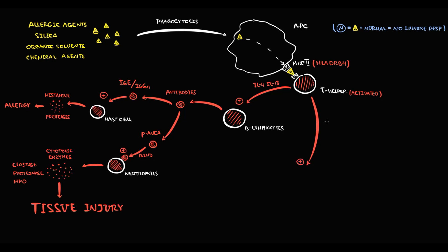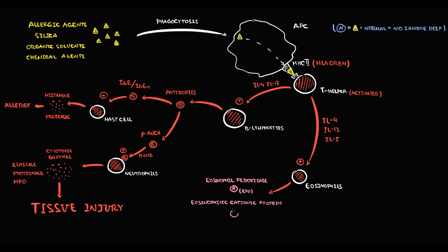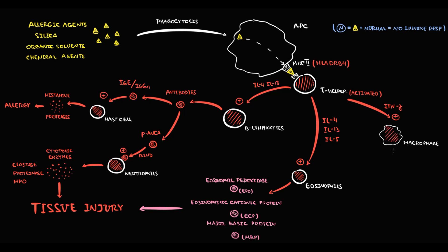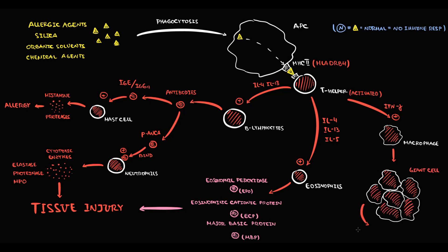T-helpers also activate eosinophils via interleukin-4, interleukin-17, and interleukin-5. Upon activation, eosinophils secrete very reactive substances: eosinophil peroxidase, eosinophilic cationic protein, and major basic protein — all of which can cause severe tissue injury. Additionally, B-lymphocytes, by production of interferon gamma, activate macrophages. A massive amount of activated macrophages in one place form a so-called giant cell, and numerous giant cells form a structure we call a granuloma.